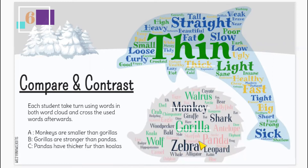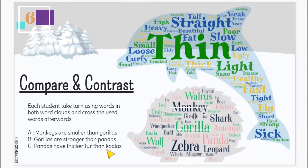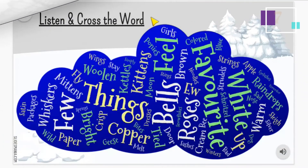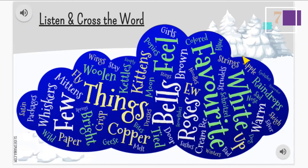The next activity is 'Compare and Contrast.' You can use two word clouds — one about animals and one about adjectives. Students play in groups of four or five, each taking turns using words from both word clouds and crossing off used words. For example: 'Monkeys are smaller than gorillas,' then 'Gorillas are stronger than pandas,' then 'Pandas have thicker fur than koalas.' They keep going until a person cannot continue and loses.